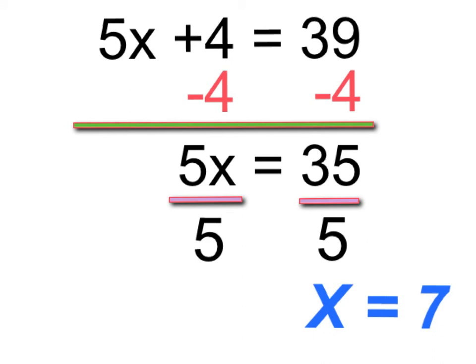From here it should be a piece of cake to solve, because now you just simply do your steps. The opposite of plus 4 is minus 4 to both sides of the equal sign. That's going to give us 5x equals 35. And then the opposite of multiplying by 5 is dividing by 5, so divide both sides by 5, and we get our x value, which comes out to be 7.